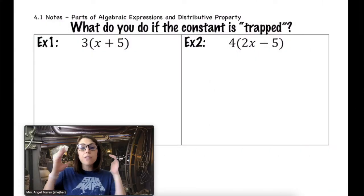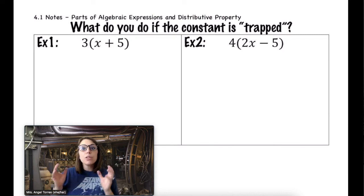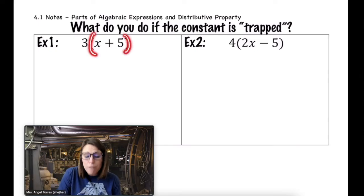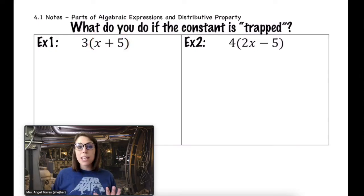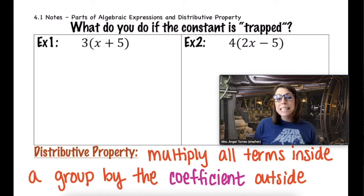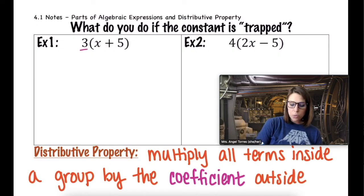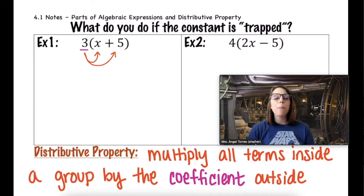What do you do if the constant is trapped? If you look here in example 1 and example 2, it looks like the constant is by itself, but it's trapped inside of a group. There is a property in math that allows us to do this. It's called the distributive property. And the distributive property basically states you can multiply all the terms inside of a group by the coefficient outside of the group. So our coefficient here is 3. So we're going to multiply both of the terms inside of the group by 3.